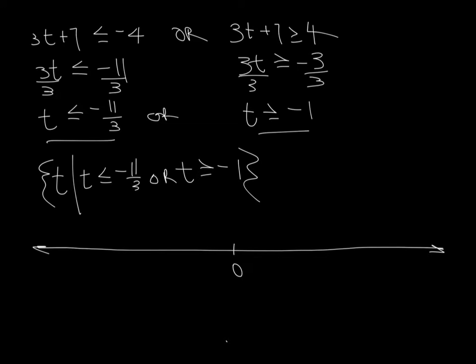So let me get a thick pen here and a color I like better, and then we'll go from there. Okay, so let's go ahead and graph this part here. So negative 11 thirds, that is a little over negative 3.